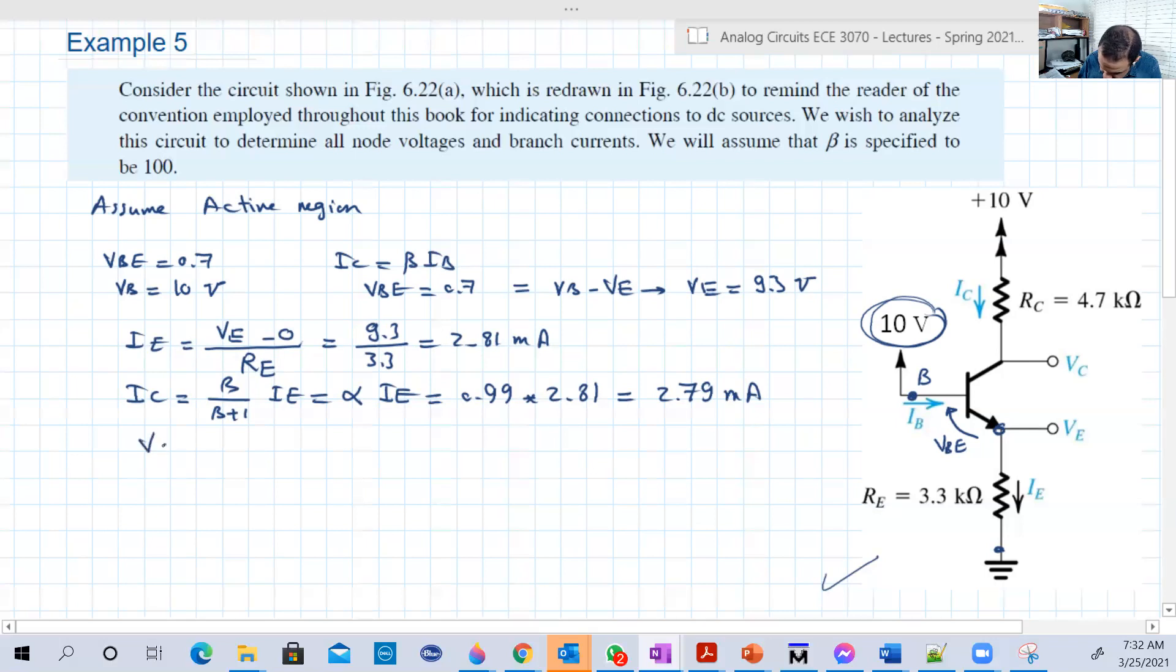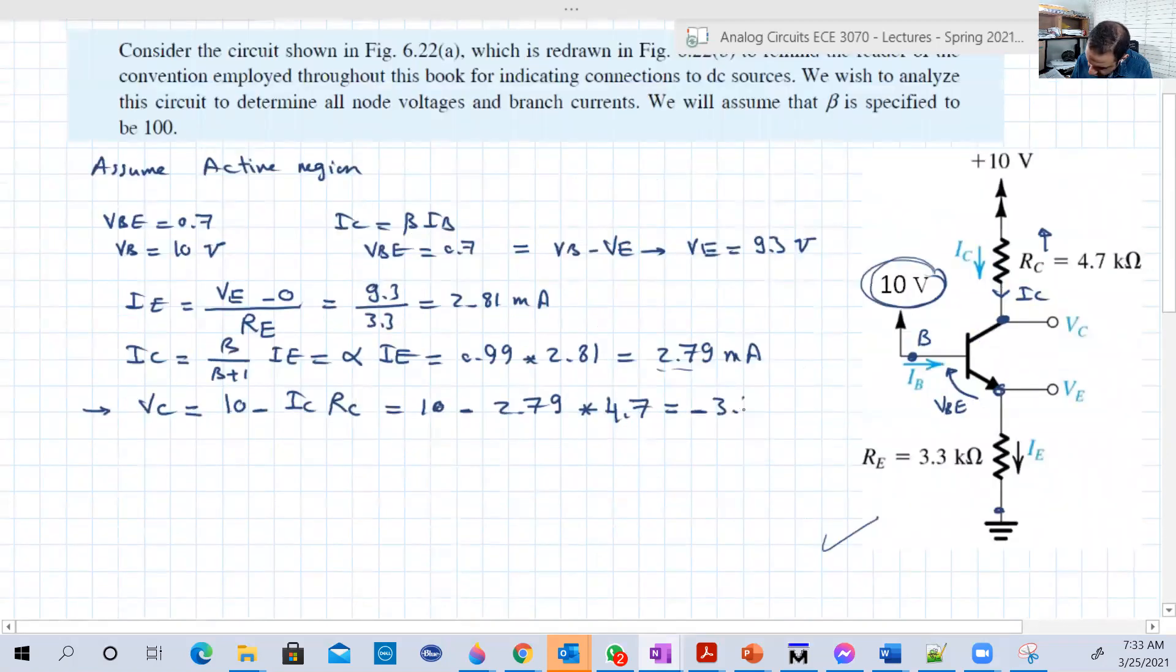Now let's calculate VC, the node voltage, the collector voltage, which is basically, you see here IC is flowing in that direction. So the voltage across the resistor RC in that direction. So VC is basically 10 minus IC times RC. So 10 minus 2.79 times RC which is 4.7 kilo ohms, minus 3.11. VC can be minus, there is no problem in that.